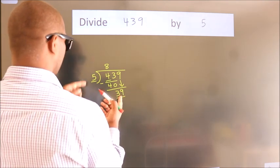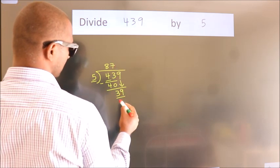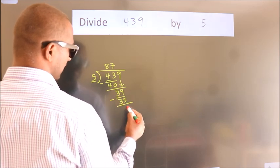A number close to 39 in 5 table is 5 7s 35. Now, we subtract. We get 4.